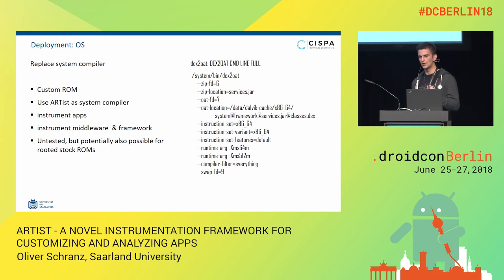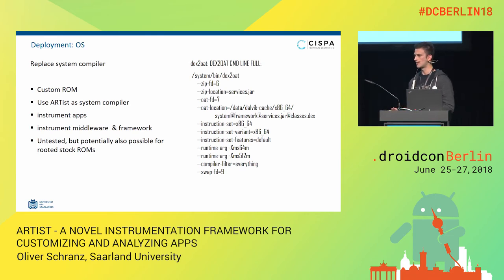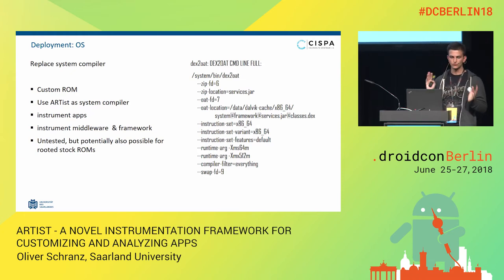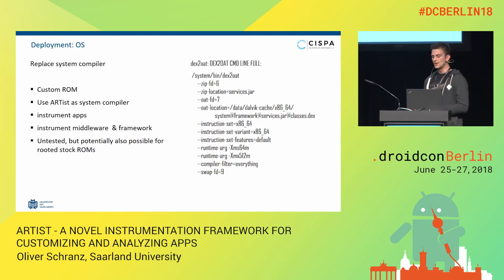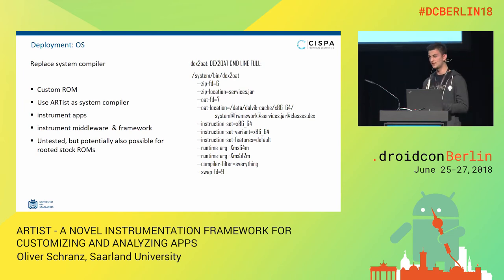You can also do this at the operating system level. If you're not focused on running on stock devices and want your own AOSP fork, you can of course replace the original compiler with our version. Then you can instrument not only apps but also system components. For example, services.jar — this is the jar that contains the complete system server, which means Package Manager Service, Application and Activity Manager Service, and all that stuff. This is roughly 25,000 methods written in Java.